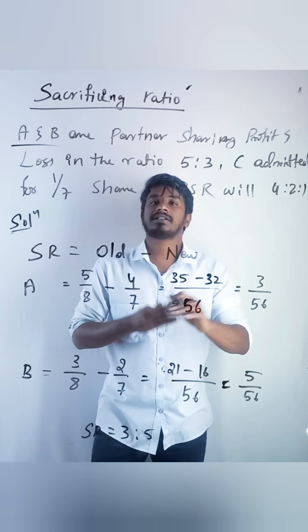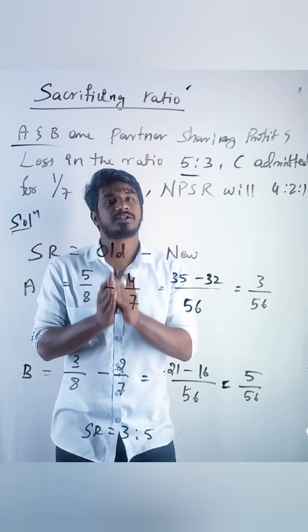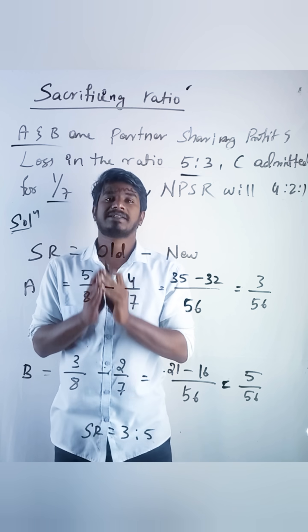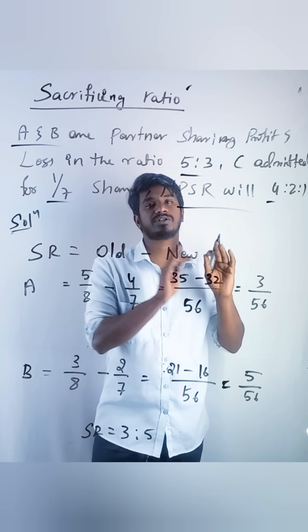In the given question, we have A and B are partners sharing profit and losses in the ratio 5 is to 3. C got admitted for 1 by 7 share and NPSR is 4 is to 2 is to 1.